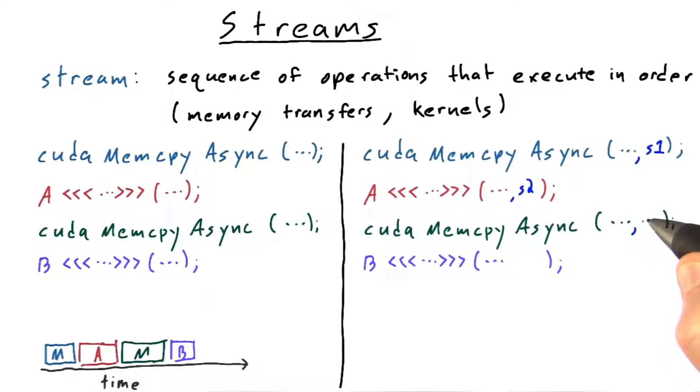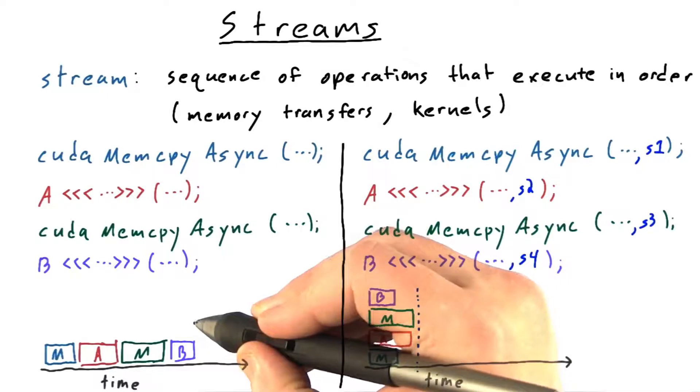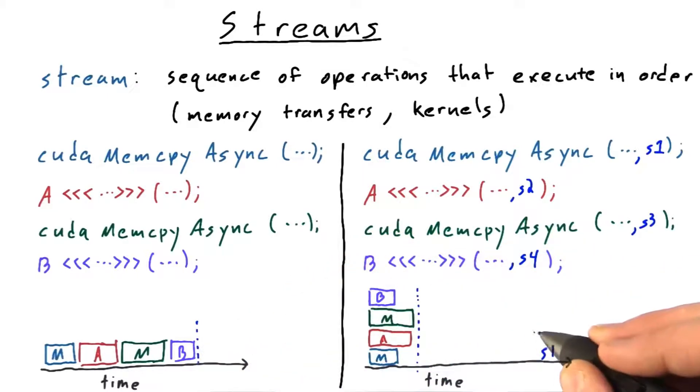But if I do those same operations, and this time I put them each in a different stream by adding a parameter which is the stream, then now these operations can potentially run concurrently, therefore completing in much less time. So this operation is in stream 1, this operation is in stream 2, this operation is in stream 3, this operation is in stream 4.